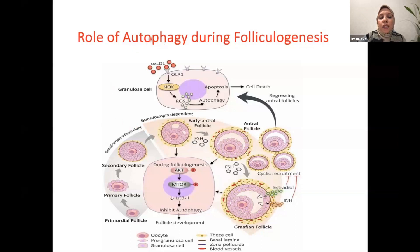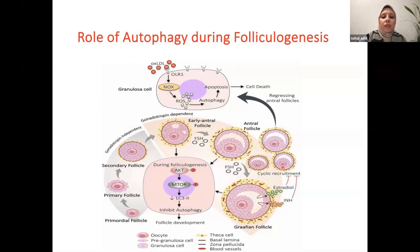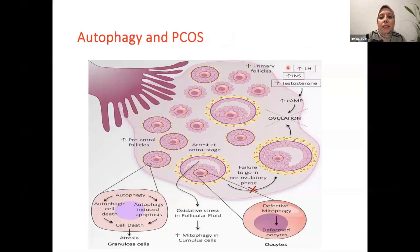Autophagy is a normal signaling pathway. During follicular development, two normal pathways must be balanced simultaneously: the mTOR signaling pathway and the autophagy pathway. The mTOR signaling pathway is responsible for the dominant follicle to complete its development, while autophagy is responsible for atresia of the remaining antral follicles.